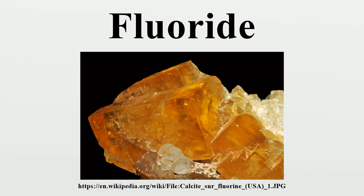Chemical properties — Basicity: Fluoride can act as a base. It can combine with a proton: F- + H+ → HF. This neutralization reaction forms hydrogen fluoride, the conjugate acid of fluoride. In aqueous solution, fluoride has a pKb value of 10.8. It is therefore a weak base, and tends to remain as the fluoride ion rather than generating a substantial amount of hydrogen fluoride. The following equilibrium favors the left-hand side in water: F- + H2O ⇌ HF + OH-. However, upon prolonged contact with moisture, soluble fluoride salts will decompose to their respective hydroxides or oxides.